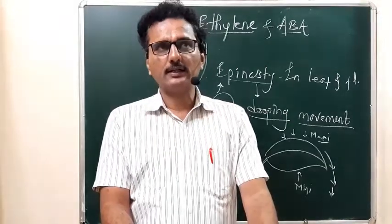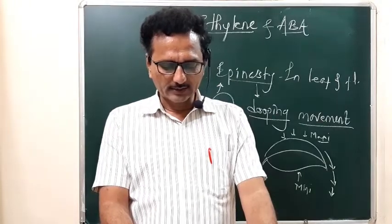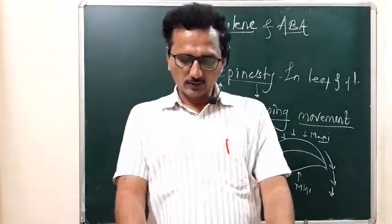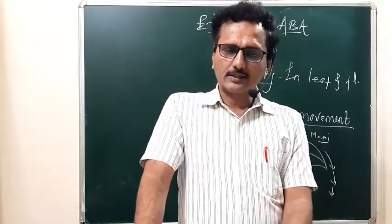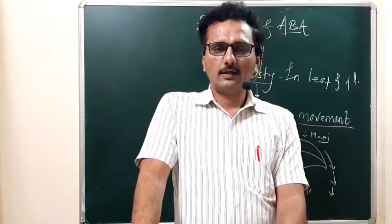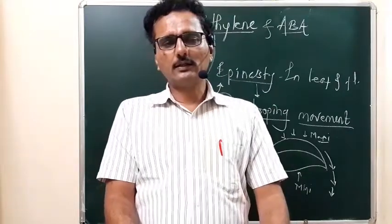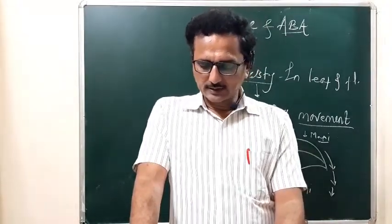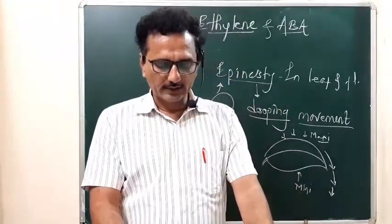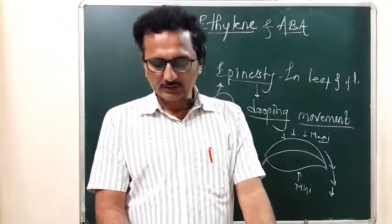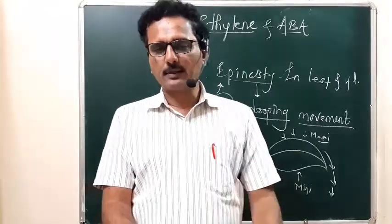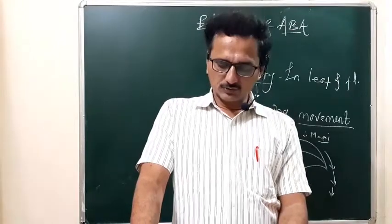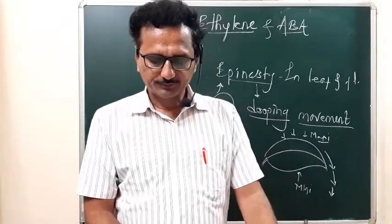Question number 257: abscisic acid is also called anti-gibberellin. It is called anti-gibberellin because gibberellin stimulates growth, but when abscisic acid is applied, whatever growth was stimulated by gibberellin is again inhibited. The options are: it inhibits growth stimulated by gibberellin, it promotes synthesis of gibberellin, it stimulates growth by gibberellin, and it suppresses growth. The correct answer is the first option.